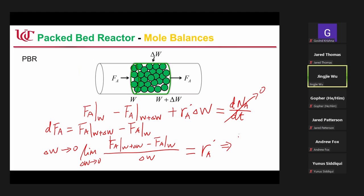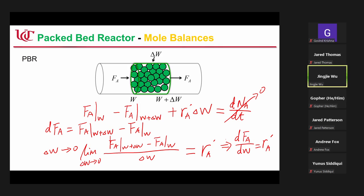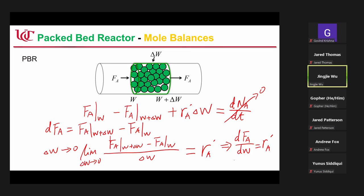So you will see it's very similar to what we have for the PFR: dFA/dW equals R'A. The only difference is now we have dW — W is the weight of catalysts. You can also integrate it to get the catalyst weight of your packed bed reactor.